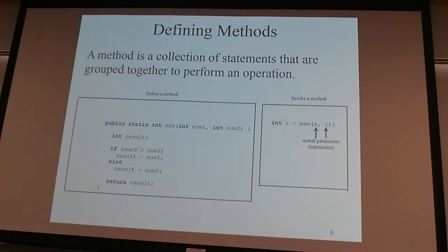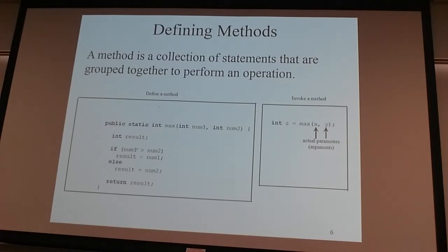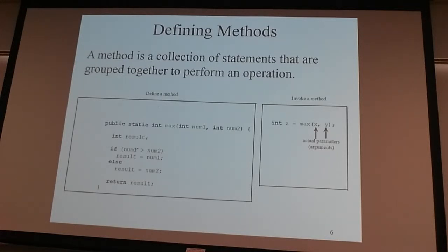Defining a method: it's a collection of statements grouped together with a name. We can pass input of any data type, and as many parameters as needed, but we can only get one return value. The method is declared public, which means it can be accessed from anywhere. We declare a local variable, do something, and then return the result. This shows a function call, or invocation of a method — invoking a method and method call are essentially the same thing.